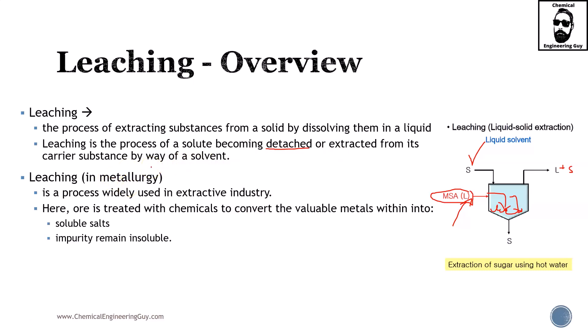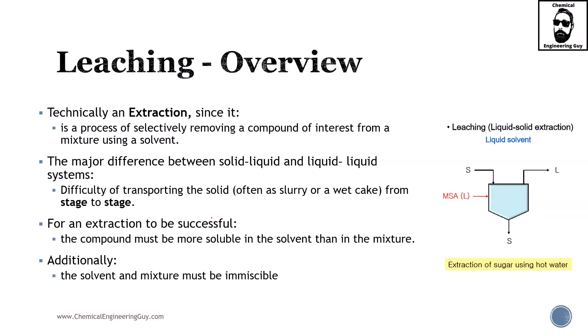Leaching is used extensively in the metallurgy industry. In that context, as a chemical or process engineer, you add a solvent that reacts with the ore, and those chemicals convert to valuable metals which end up in solution. You then remove the solution, getting the depleted ore, and separate the soluble salts by electrodes — eventually obtaining pure metal in solid phase, such as copper or silver.